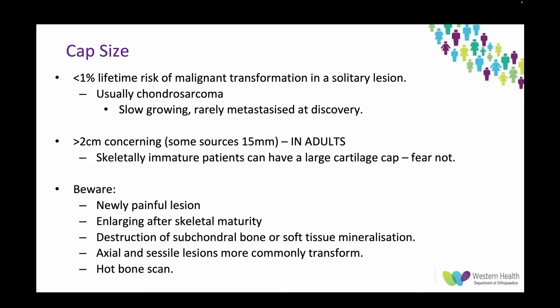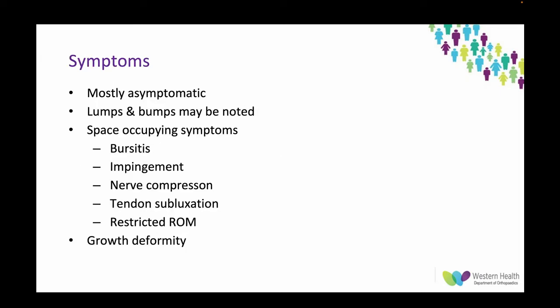Axial and sessile lesions more commonly transform, so pelvic lesions in particular, and anything that's hot on bone scan. Symptoms: these are mostly asymptomatic and can be managed with observation. Patients typically complain of lumps and bumps, and symptoms revolve around space-occupying effects such as bursitis, impingement, nerve compression, tendon subluxation — particularly around the PEZ — restricted range of motion, and growth deformities.